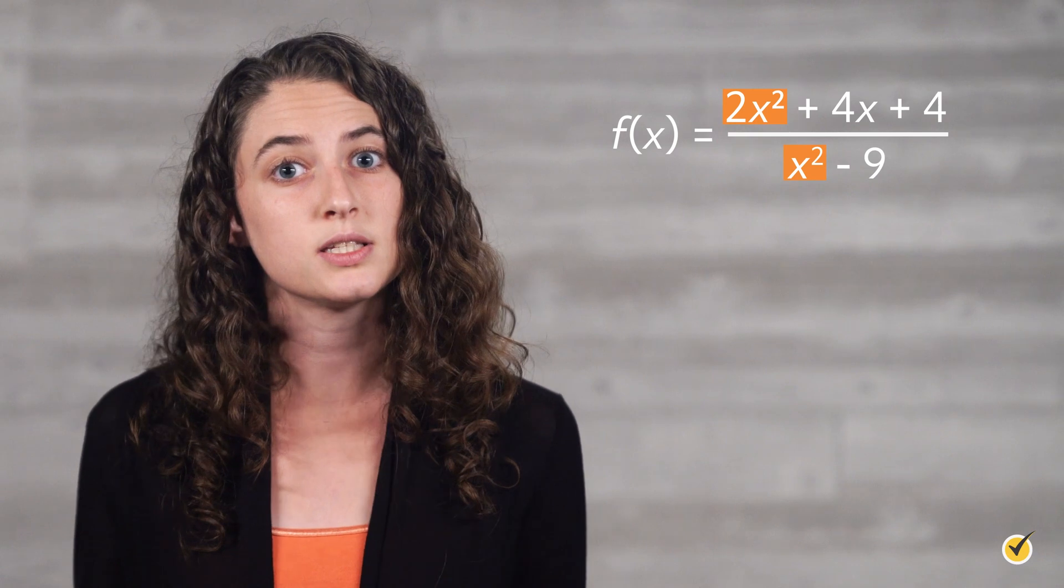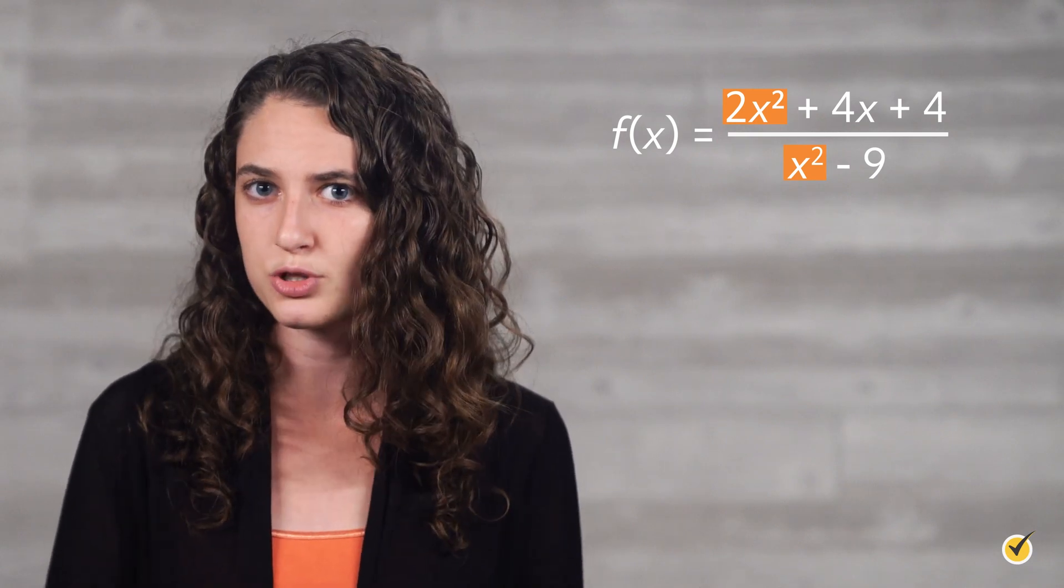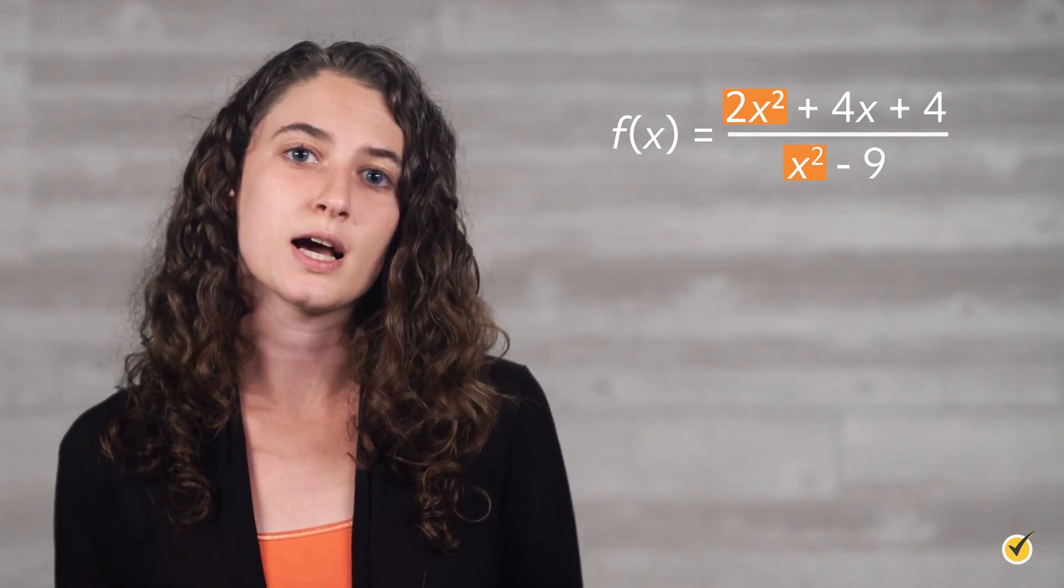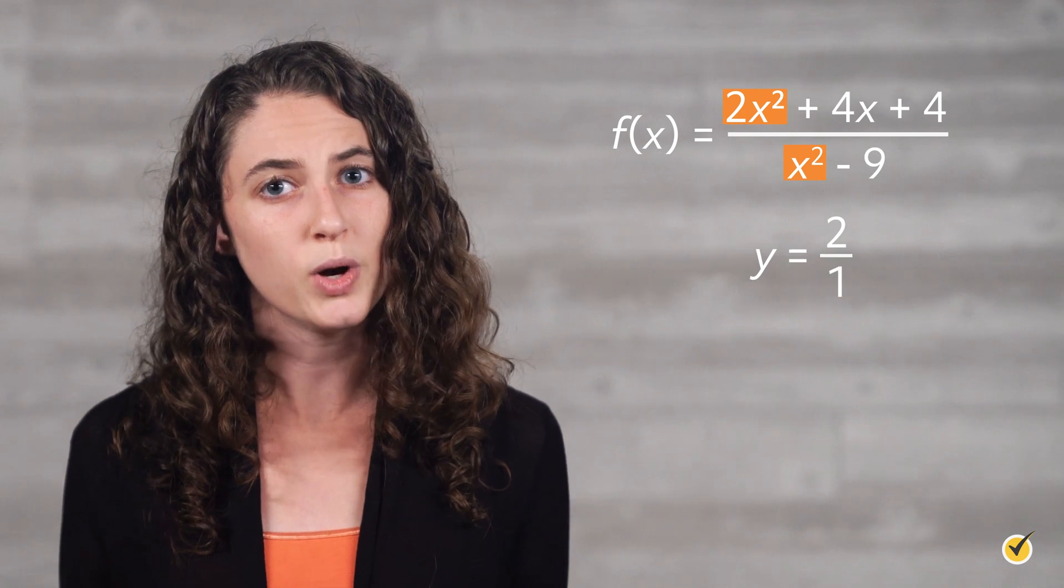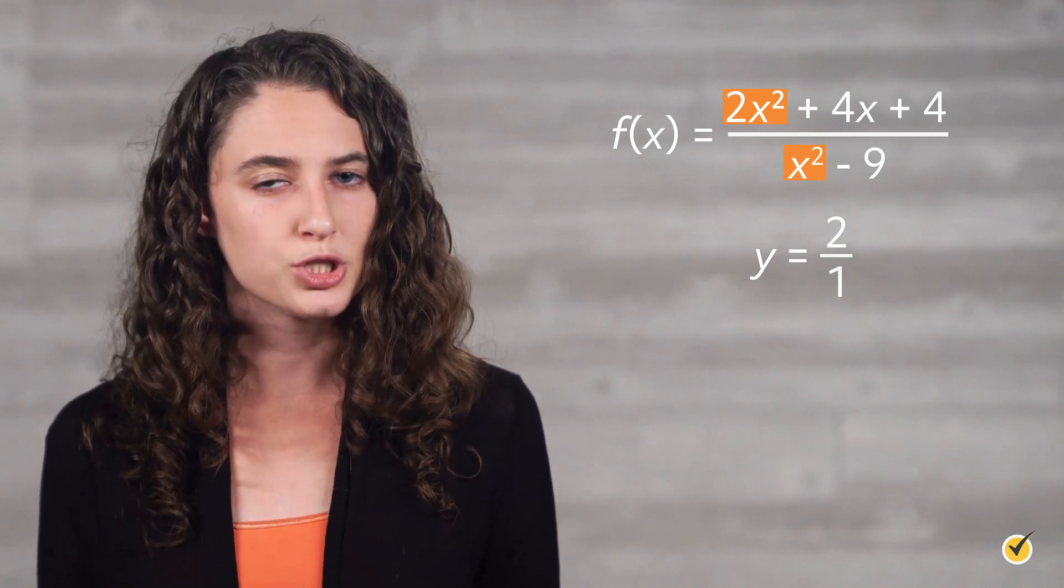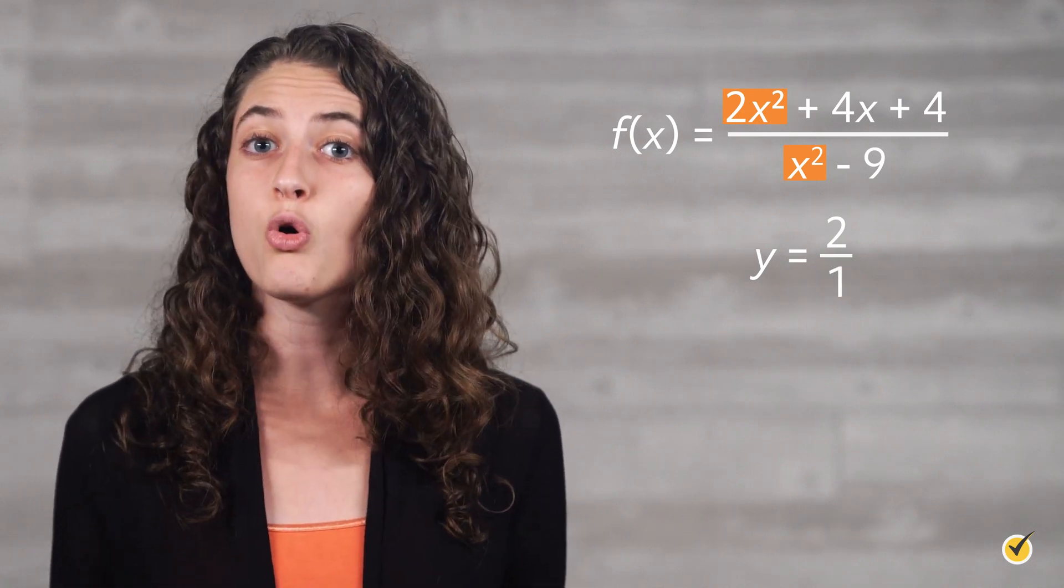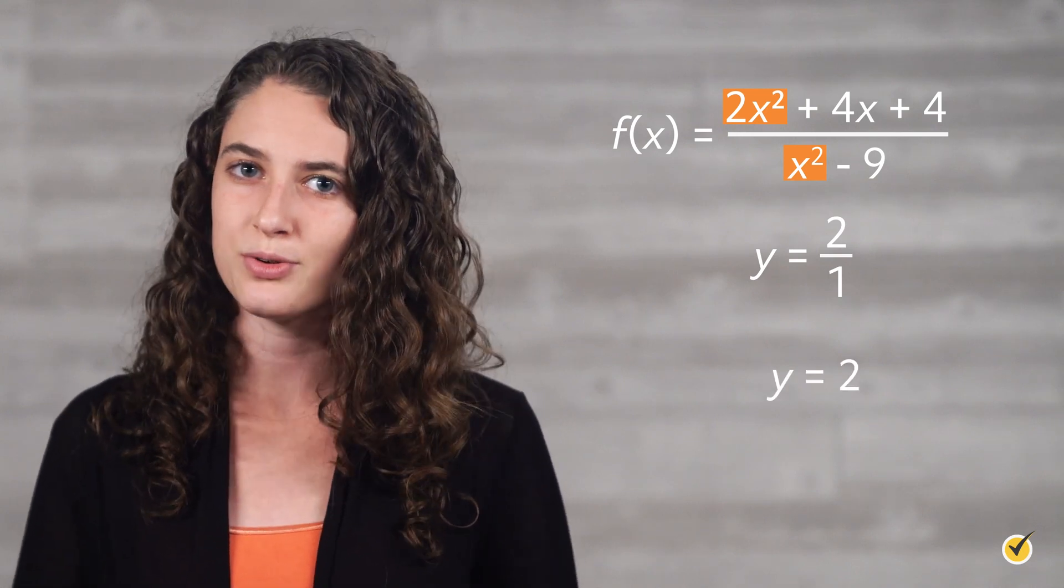Since these are both to the same power, in this case, they are both squared, there will be a horizontal asymptote at the quotient of their coefficients, y equals a over b. In this case, a equals 2, and b equals 1, so we have 2 over 1, which is equal to 2. So there's a horizontal asymptote for this function at the line y equals 2.